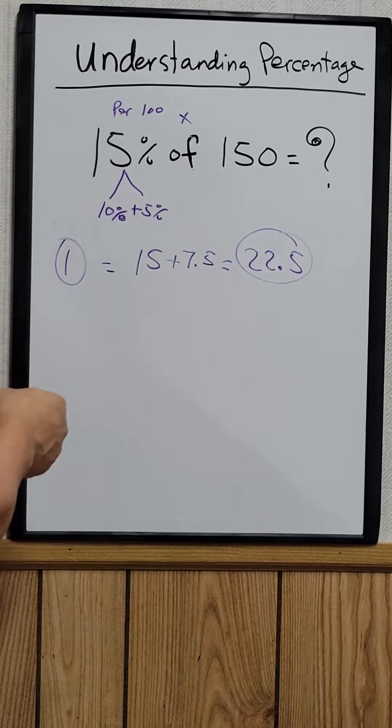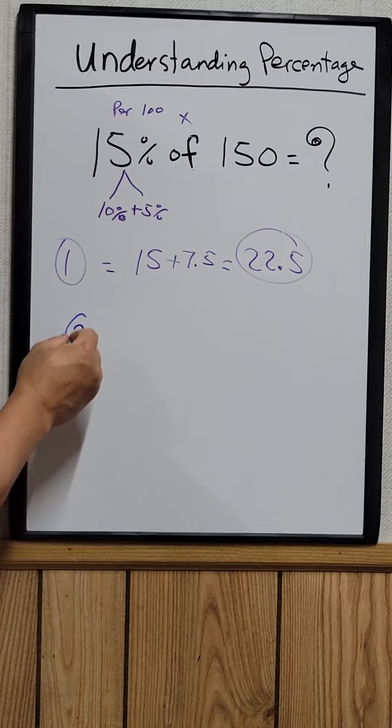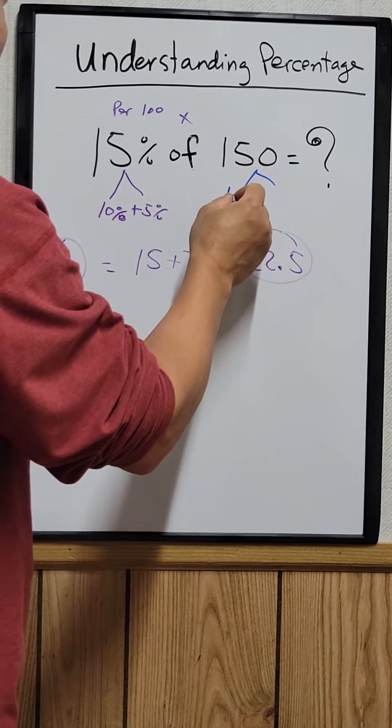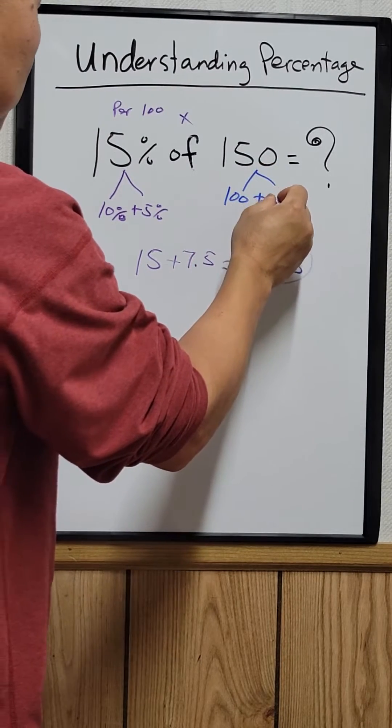The second way to do it, you can break this down. 150, you can break it down as 100 plus 50.